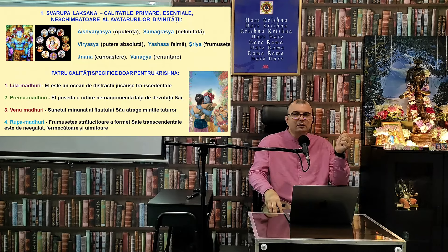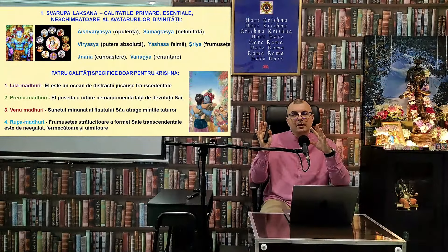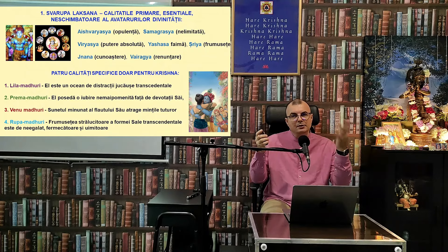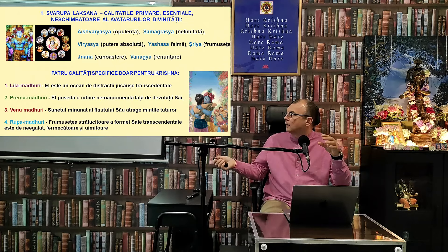Atunci când suntem acoperiți de energia materială, poate nu suntem foarte tare atrași de această formă — la fel cum fierul acoperit de rugină nu se atrage de magnet. Dar în momentul în care rugina este curățată, el se atrage. Vedele descriu 64 de calități: 60 le posedă celelalte avataruri, iar aceste patru calități sunt tipice doar pentru Suprema Personalitate a Divinității, sursa celorlalte avataruri.